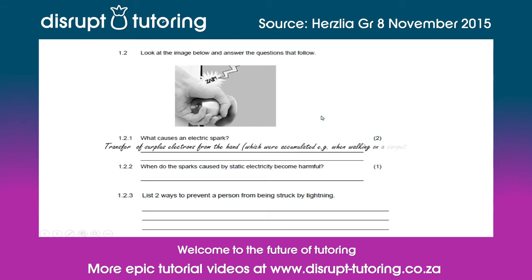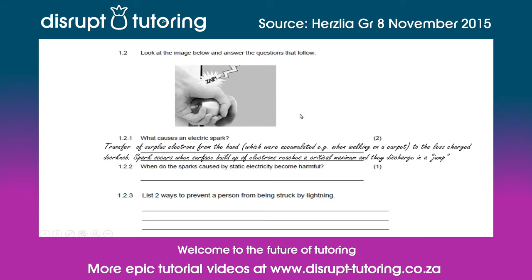A transfer of surface electrons from the person's hand — which were accumulated, for example from walking on carpet or rubbing against clothing, as friction causes the transfer of electrons — to the less charged doorknob causes the zap. The spark occurs when the surface buildup of electrons from the hand reaches a critical maximum and they discharge in a jumping motion, transferring from the more charged hand to the less charged doorknob. That is what causes the electric spark.